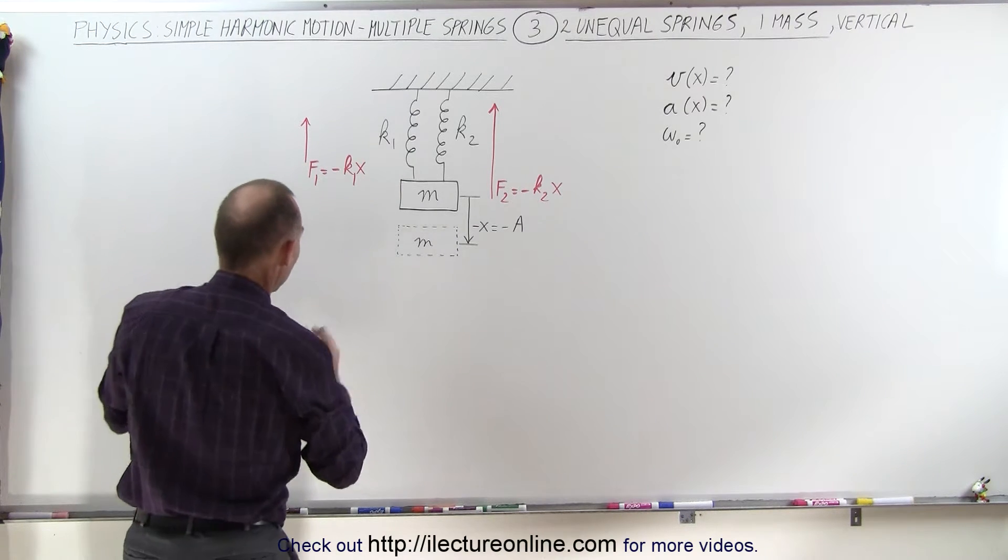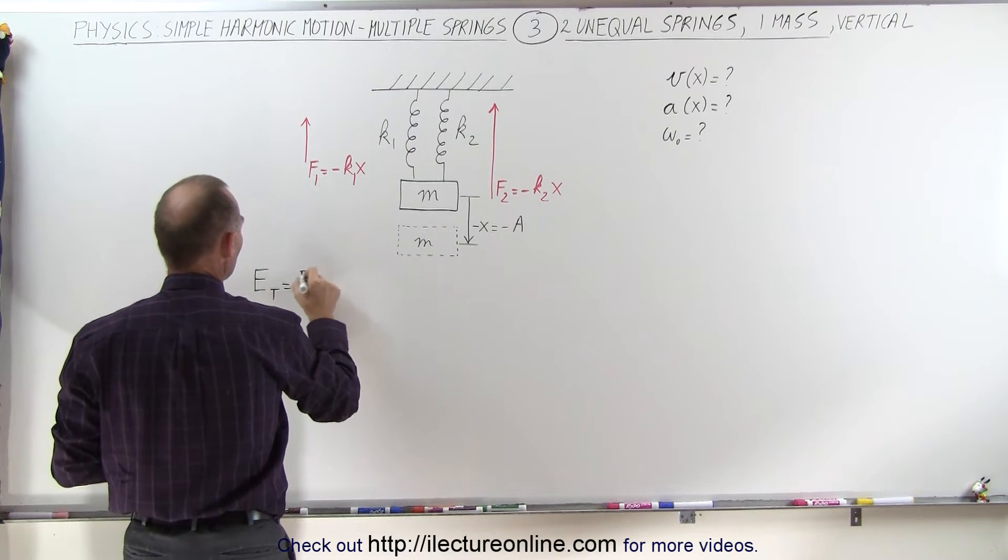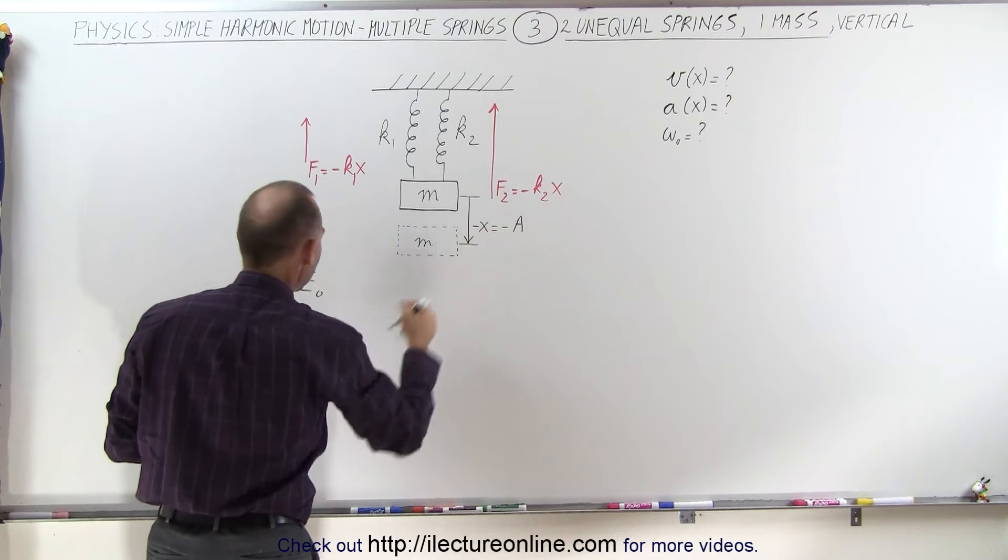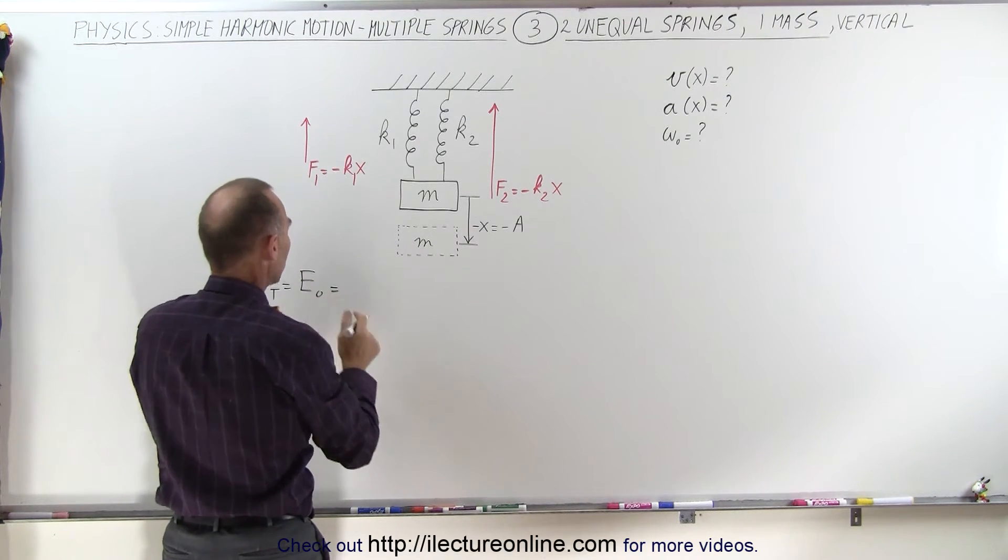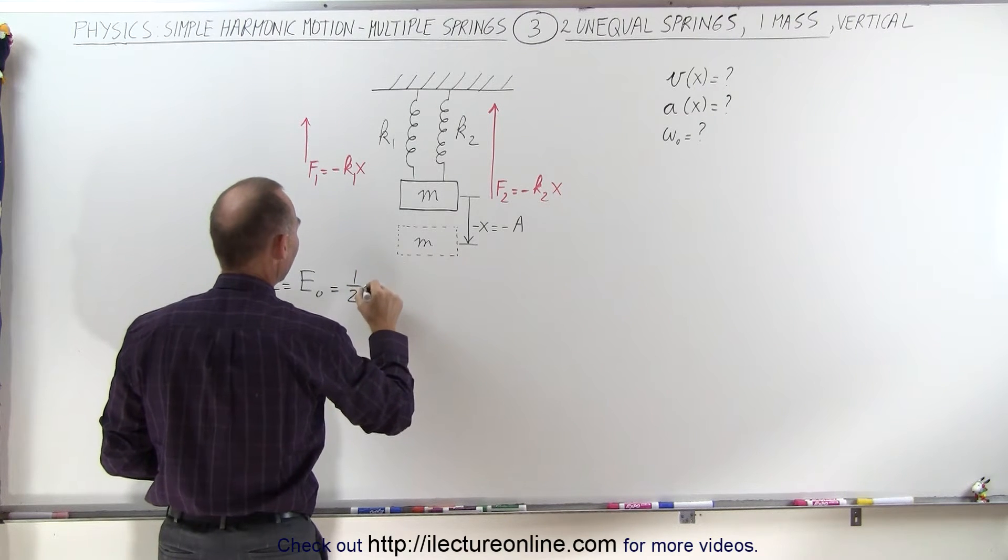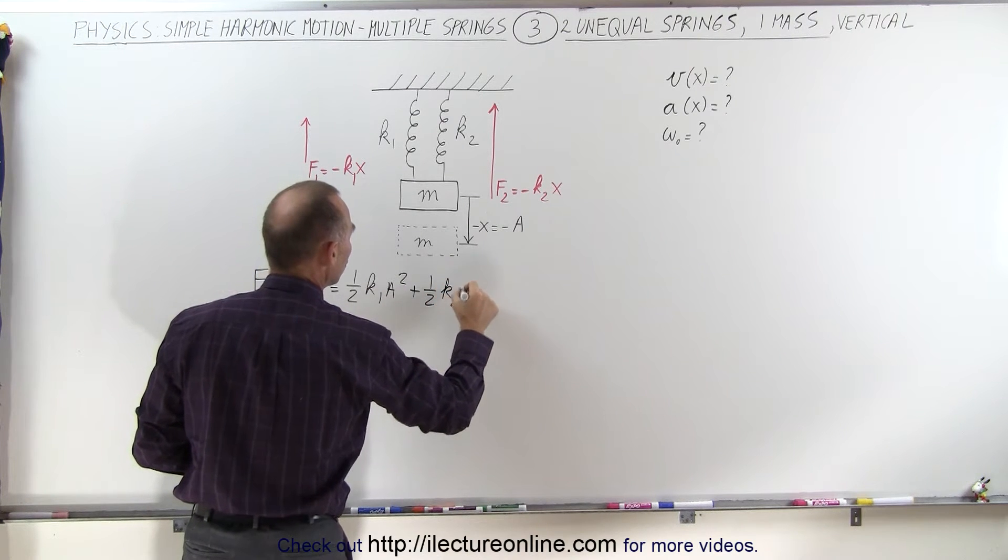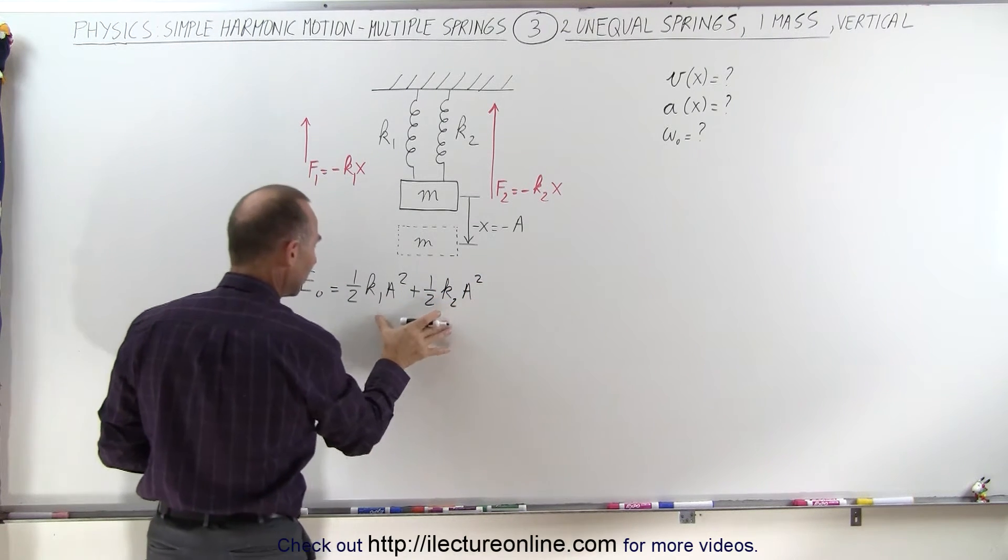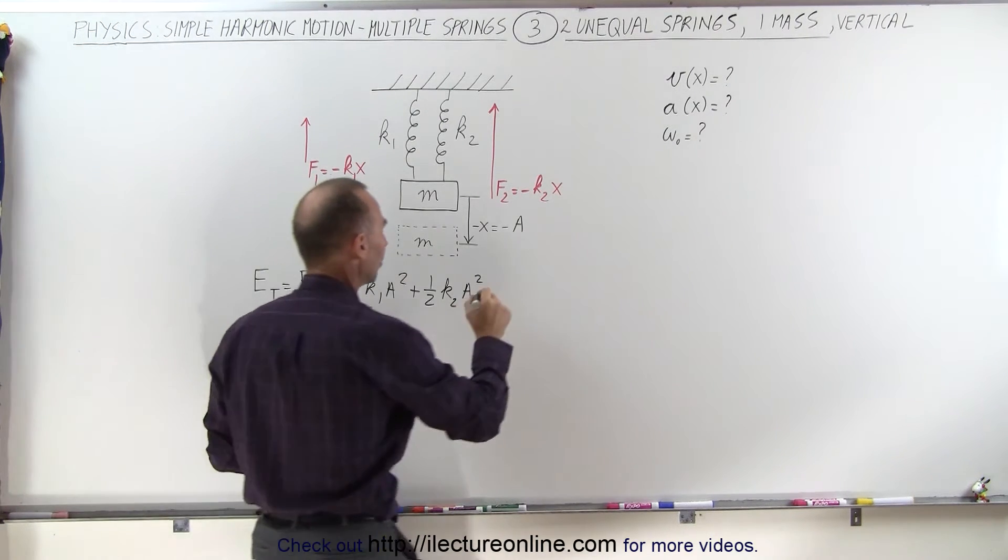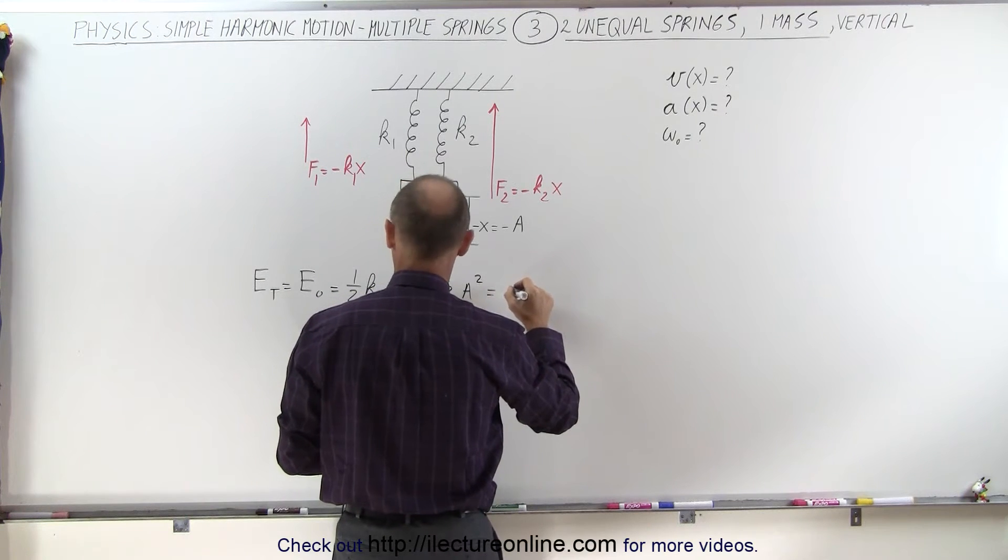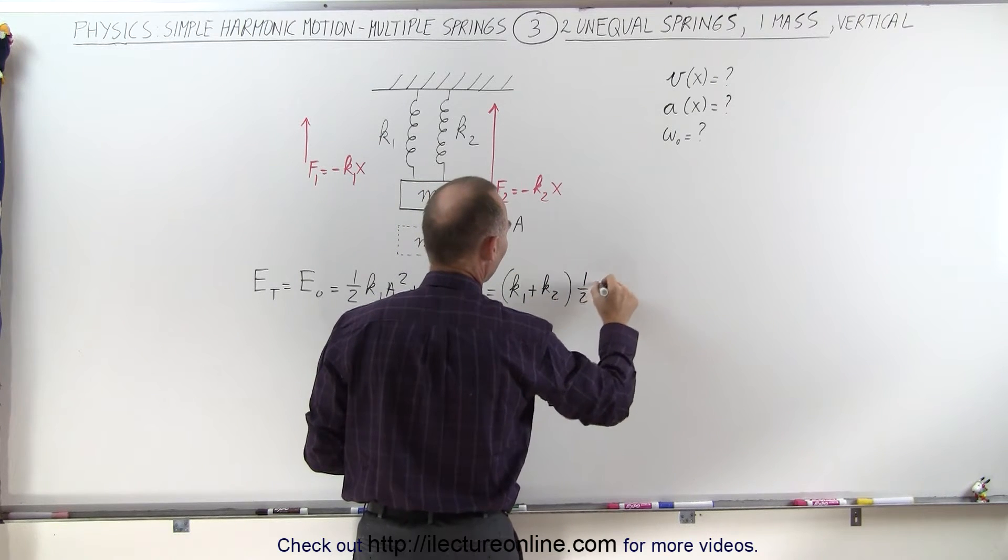And so what happens then is we have this situation where the total energy, which is equal to the initial energy that we put into the system when x is equal to A, then we can say that this is equal to the total potential energy in the spring, which is one-half k1A squared plus one-half k2A squared. That will be the total energy stored in the two springs, and we can factor out one-half A squared, so this becomes k1 plus k2 times one-half A squared.